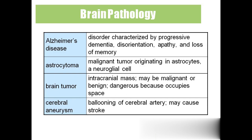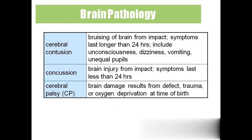A brain tumor is very dangerous because it occupies space inside the brain. 'Cerebral aneurysm' is ballooning of a cerebral artery and can lead to stroke. 'Cerebral contusion' is bruising of the brain from impact — such as an accident, falling from a bike, or any sudden hit on the head. If symptoms including unconsciousness, giddiness, vomiting, and unequal pupils last longer than 24 hours, we call it cerebral contusion.